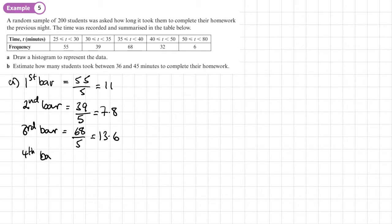The fourth bar has a frequency of 32 and a width of 10. So that has a height, a frequency density of 3.2. And the fifth bar, the last bar, has a frequency of 6 and a width of 30. So that has a frequency density or a height of 0.2.